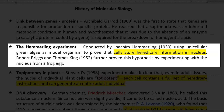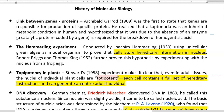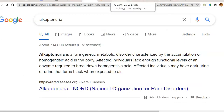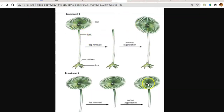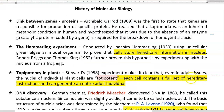The next finding is by Joachim Hammerling. He is a person very famous for his series of experiments. He proved that the nucleus specifically serves as a storehouse for hereditary information. For this, he used a green algae called acetabularia, and by using this green algae, he proved that the genetic information is stored in the nucleus.